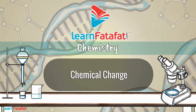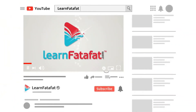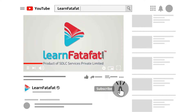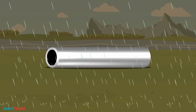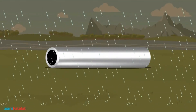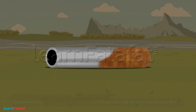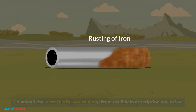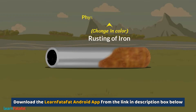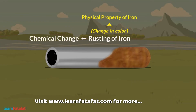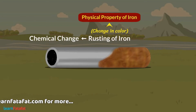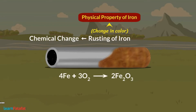Chemical change. Have you ever observed that a clean shiny iron metal turns brownish after some days? We call it rusting of iron. Here there is a change in colour, which is a physical property of iron. So is it a physical change? No, it is a chemical change.